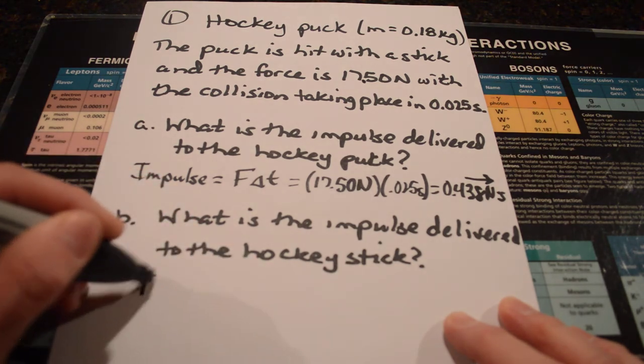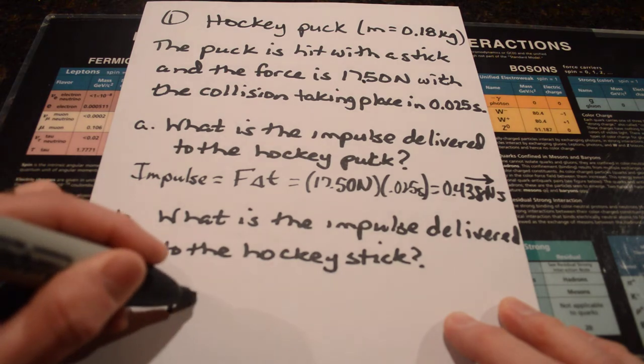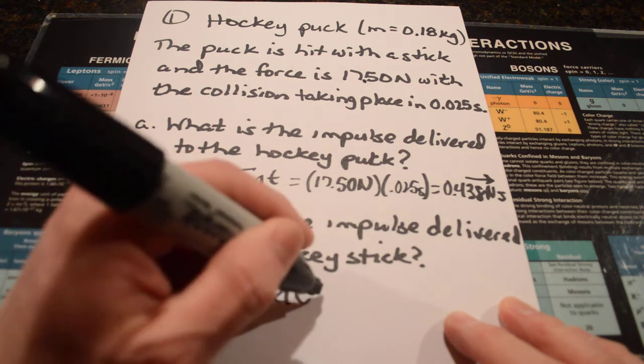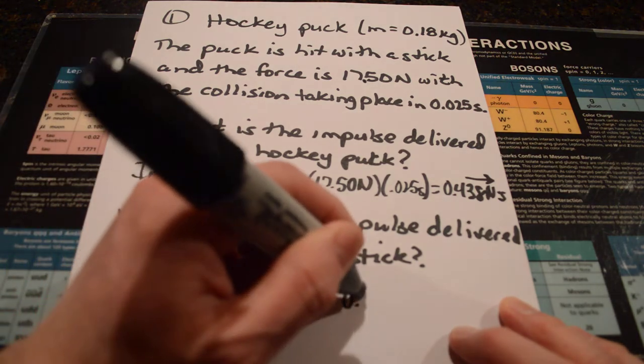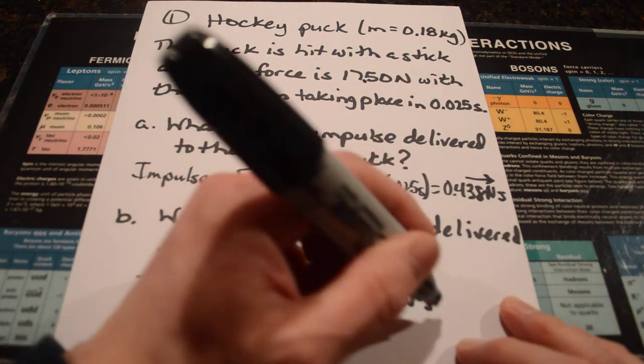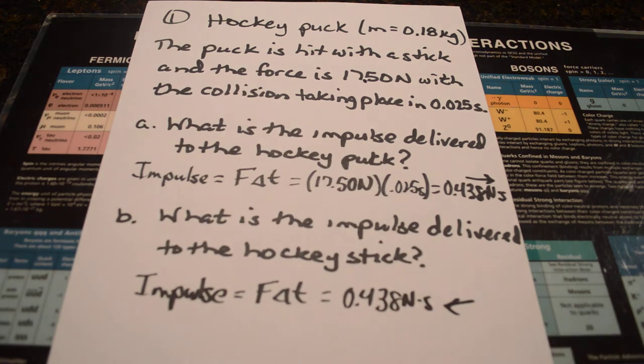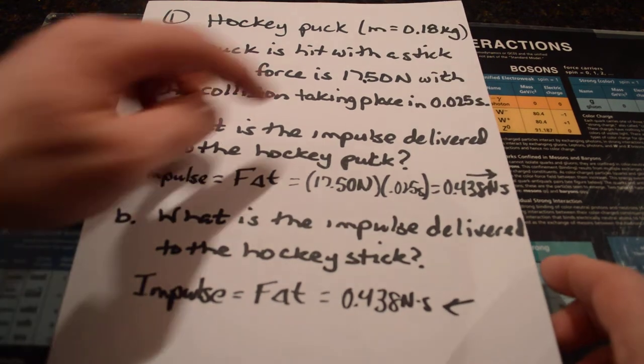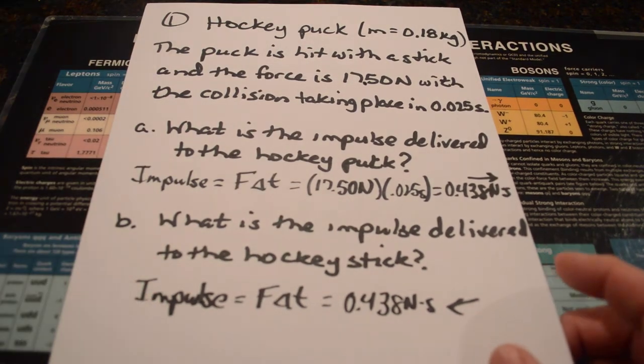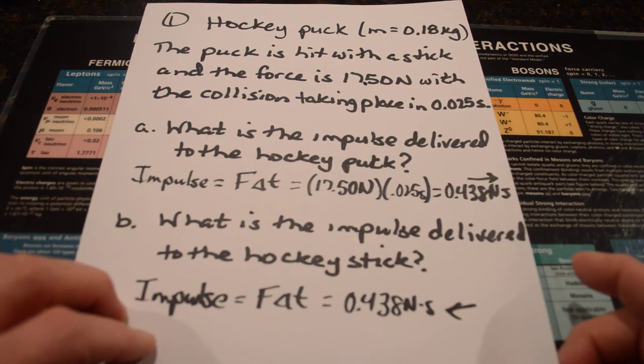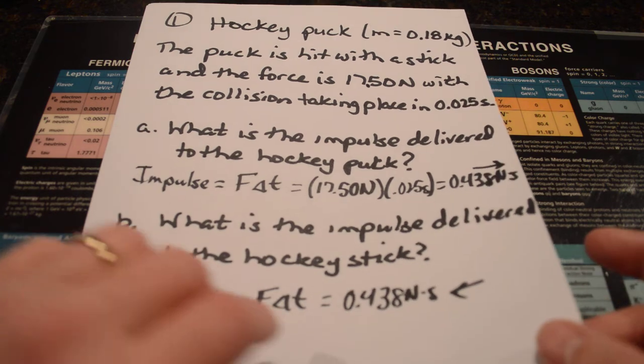So, the impulse for the hockey stick has to be equal to the force times the change in time again. Then, you're going to get the same answer, 0.438 newton seconds. It's just going to be in the opposite direction. Same impulse between the two. The force the puck exerts back has to also be 17.50 newtons from Newton's third law. So, the impulse is the same. It's just in the opposite direction for the stick versus the puck.